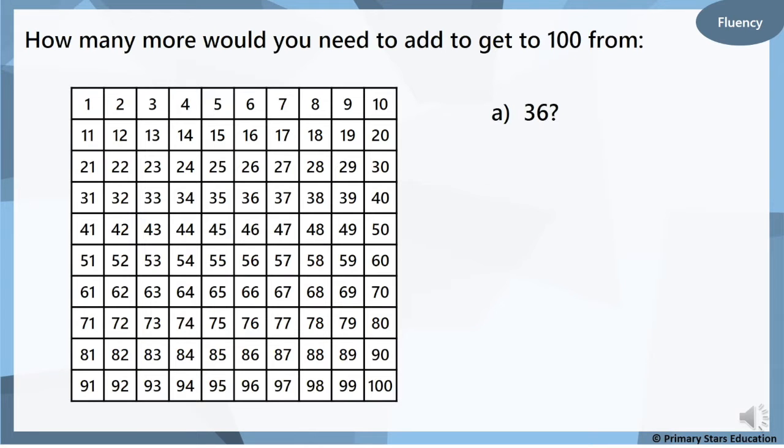Okay, there is a number square, you're all very familiar with those. I want you to think how many more would you need to add to get to 100 from 36. So have a look at 36 on your 100 square and how many more tens and then how many more ones are you going to need to add until you get to 100?